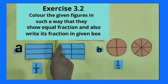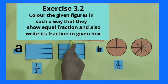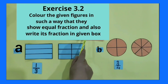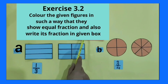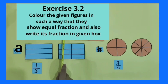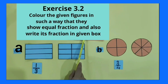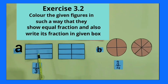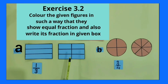Sum number 1. Color the given figures in such a way that they show equal fractions, and also write its fraction in the given box. In this, two shapes are given and we have to color these two shapes in such a way that they become equivalent fractions.